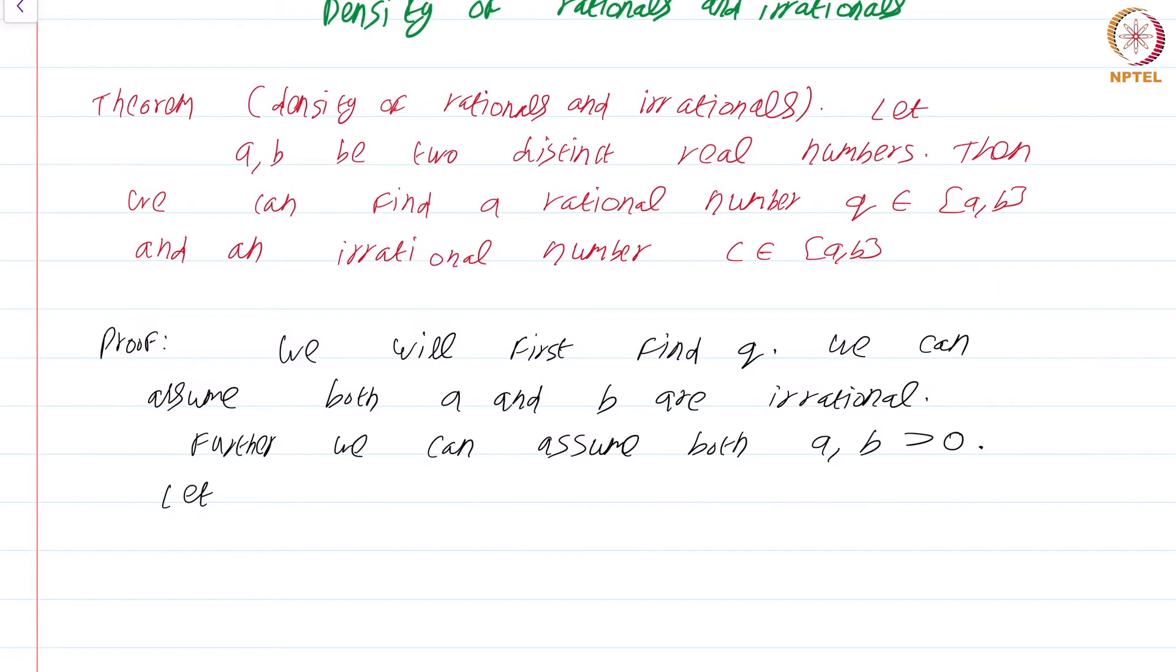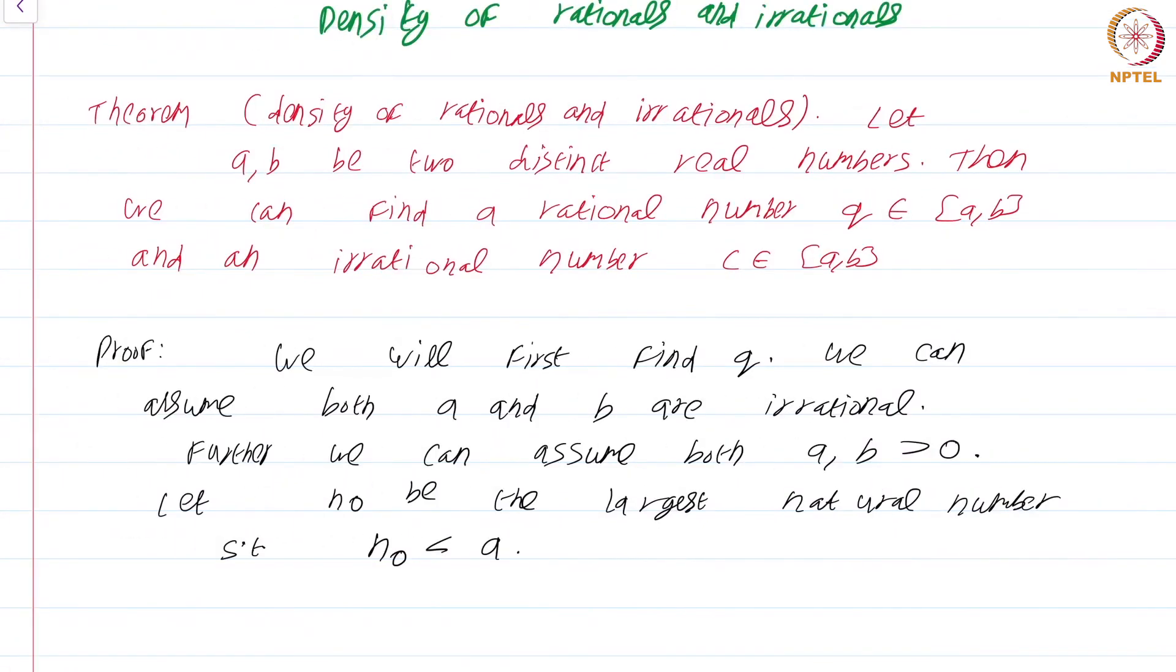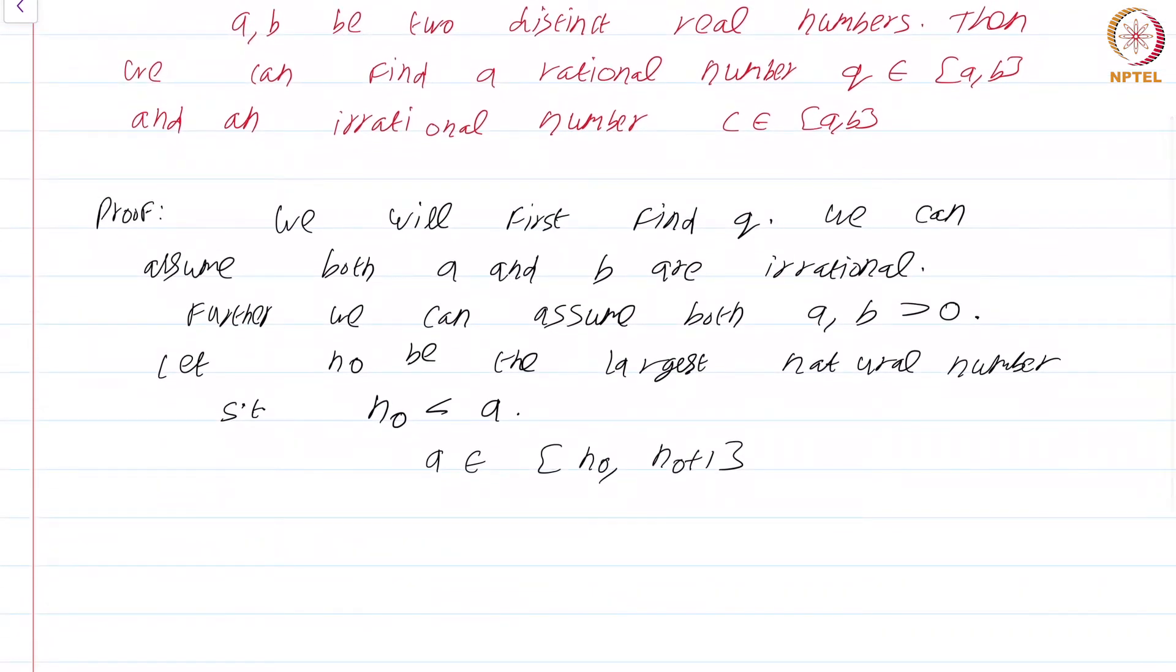Let n_0 be the largest natural number such that n_0 is strictly less than a. In other words, a is an element of the closed interval [n_0, n_0+1].